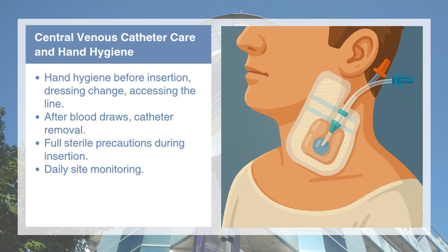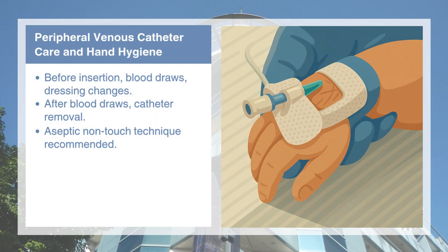Central lines have a high infection risk. Perform hand hygiene before and after each manipulation to prevent bloodstream infections, and ensure full sterile technique at catheter insertion using antiseptic solutions properly. Although peripheral lines are common, they can still cause serious infections if not properly cared for. Perform hand hygiene before and after handling the catheter, drawing blood, or changing dressings. An aseptic non-touch technique helps minimize the risk of introducing skin flora into the bloodstream.